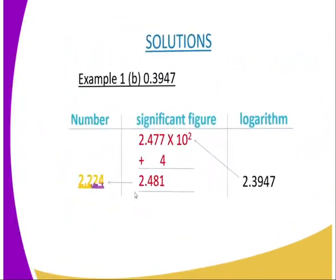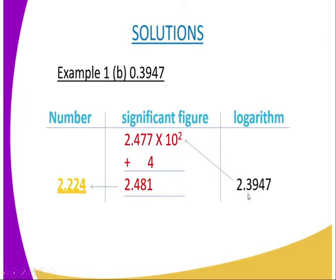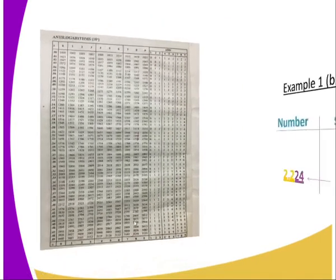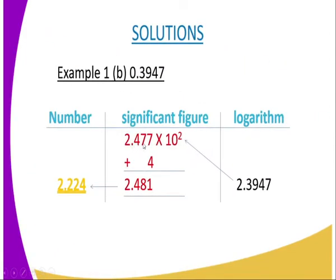Moving to part (b), we need the anti-log of 2.3947. The characteristic is 2, so we will write the result times 10 to the power 2. We go to the anti-logarithm table and read the row for .39 and column 4, which gives 2.477.